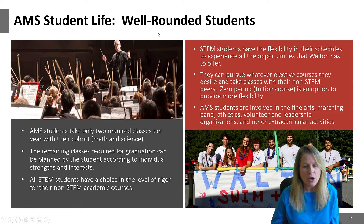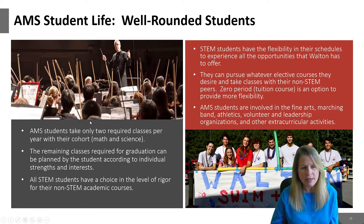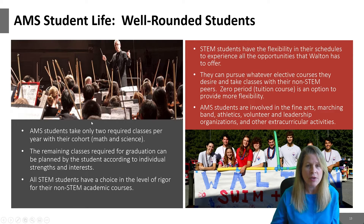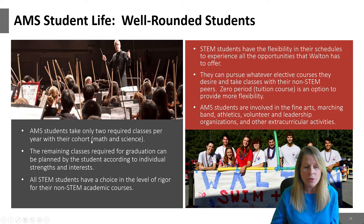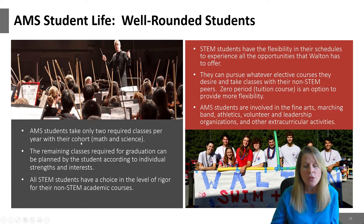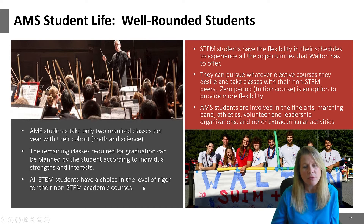Looking at your student life, our goal at Walton for the STEM Academy is to produce well-rounded students. Since we aren't a magnet program, you have more latitude in the classes you choose to take. If you are in AMS, you are required to take two classes per year with your cohort — your math and science classes. The rest of your schedule, the other four classes, you're free to choose whatever you want as long as it meets your graduation requirements and the level of rigor you choose. You also want to look at things that meet your interests, so you have some freedom there with your electives.